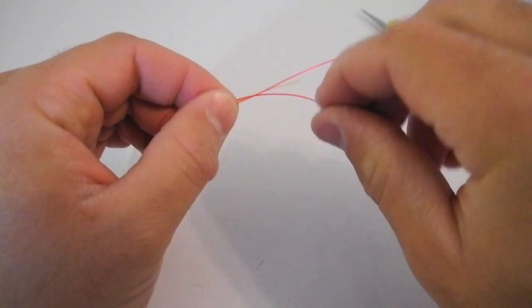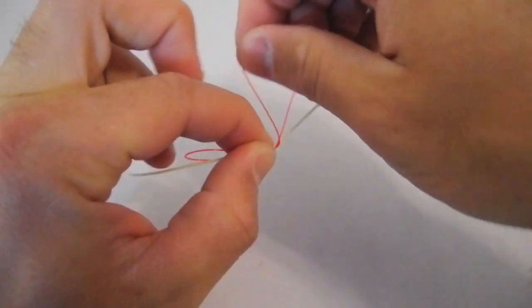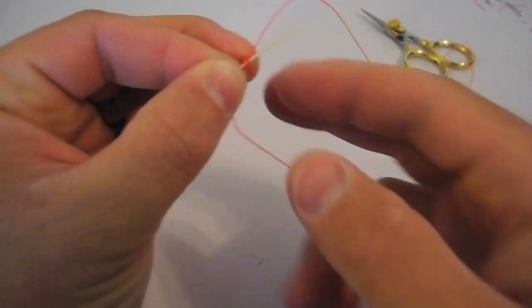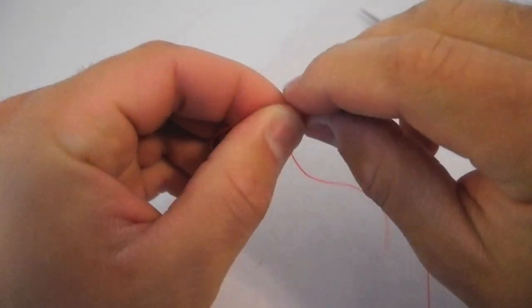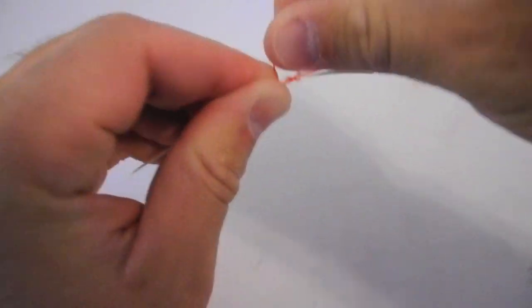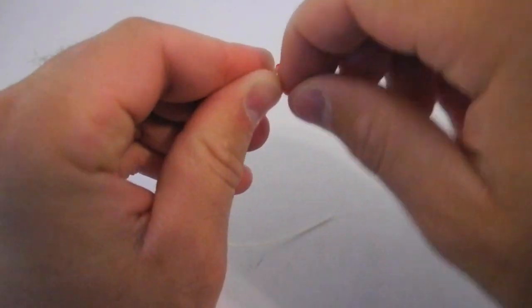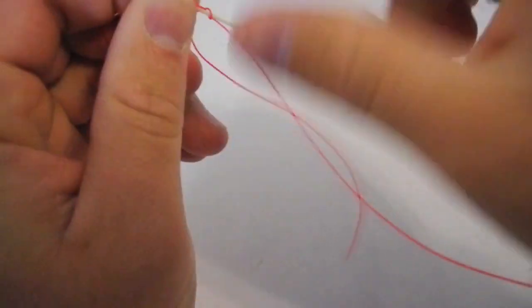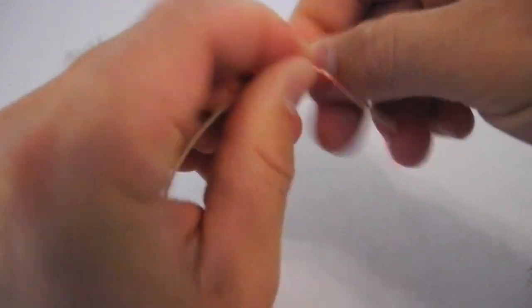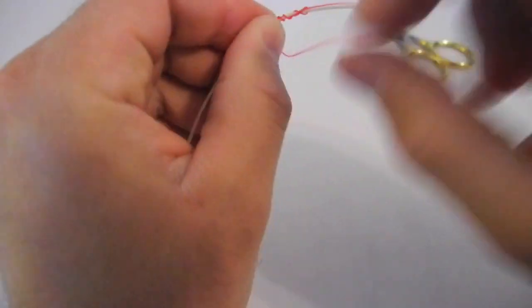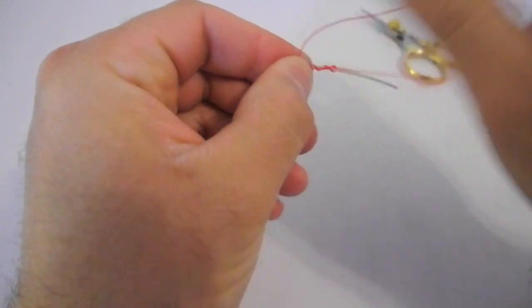Now what we're going to do is take the tag end of the leader and just wrap it around our fly line to get it started. Then we're actually going to wrap back up over itself, and we want to place these wraps right behind each other. I'm going to do this about five or so times, and that way we'll get a decent connection there.